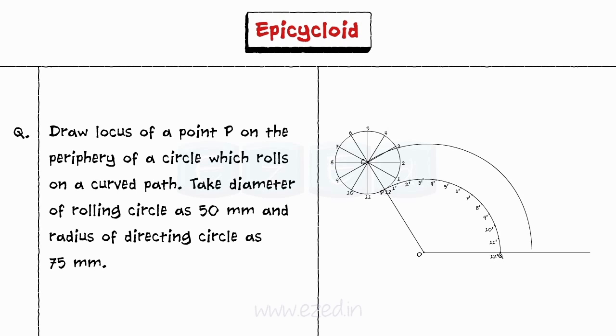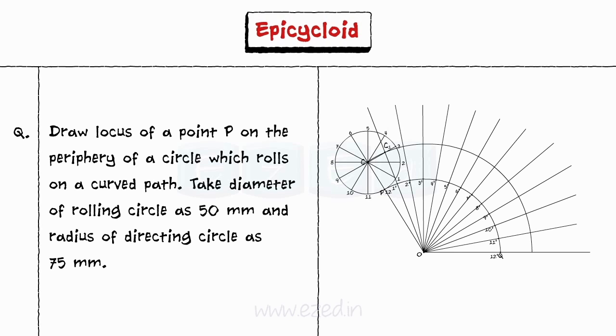Step 6: Extend line O1' till it meets locus line at C1. Similarly, extend O2', O3', O4' till O12' till it meets locus line at C2, C3, C4 till C12.